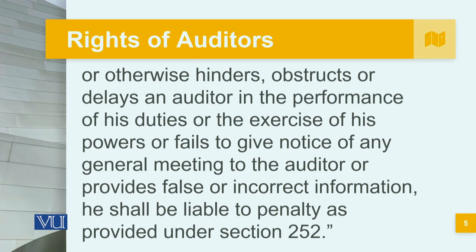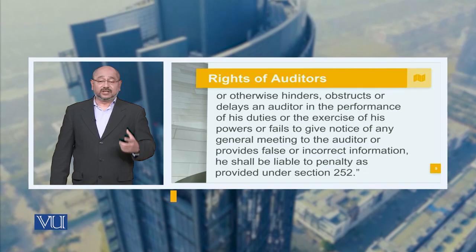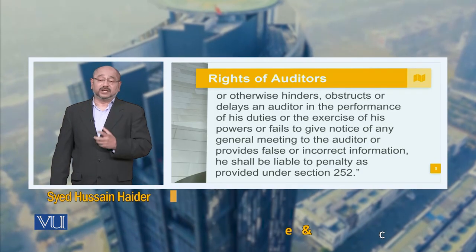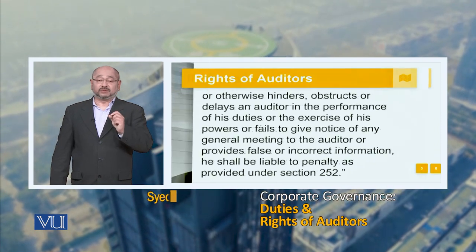Furthermore, anyone who hinders, obstructs or delays an auditor in the performance of his duties or the exercise of his powers, or fails to give notice of any general meeting to the auditor, or provides false or incorrect information, shall be liable to penalty as provided under Section 252. The role of the auditor is always present — like a hanging sword on the organization — because everything will be checked and third-party evaluation will be conducted in the best possible way.